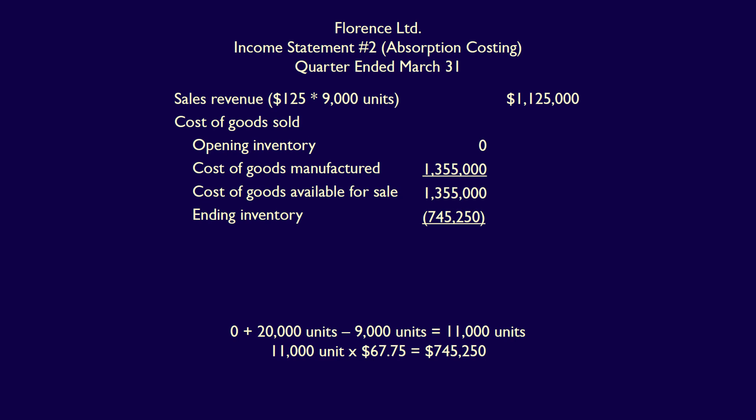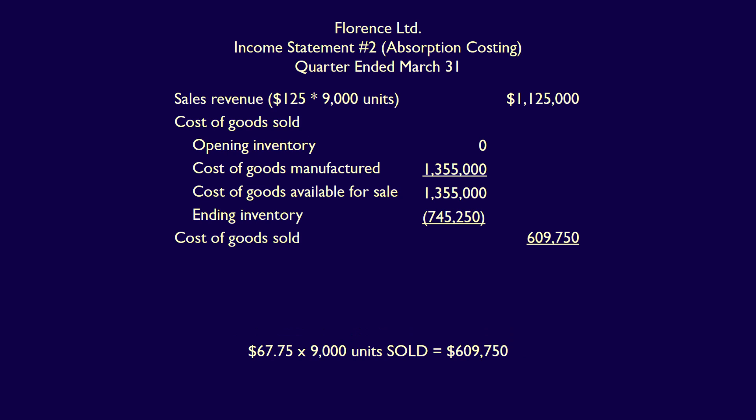Deducting ending inventory: opening units of zero, plus 20,000 produced, minus 9,000 sold, equals 11,000 units in ending inventory. 11,000 units multiplied by $67.75 equals $745,250. Deducting ending inventory of $745,250 from cost of goods available for sale of $1,355,000 gives cost of goods sold of $609,750. Note we can also calculate this as 9,000 units sold multiplied by $67.75, which equals the same $609,750. Sales revenue of $1,125,000 minus cost of goods sold of $609,750 equals gross profit of $515,250.